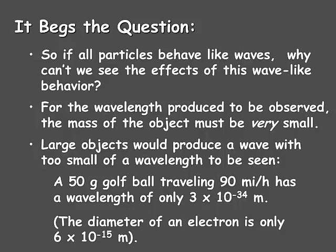To give you an idea of its size: the diameter of an electron, which we know to be extremely small, is only 6 times 10 to the negative 15th meters — and the golf ball's wavelength is much, much, much smaller than that. When you look at the exponent, 10 to the negative 34 of a meter, that's an extremely small amount and is not detectable.